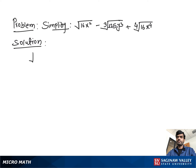Simplify square root of 16x squared minus cube root of 125y cubed plus 4th root of 16x to the 4th.